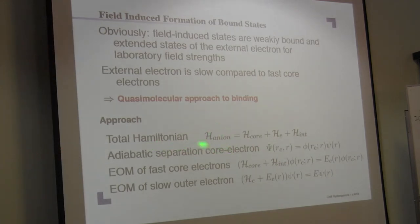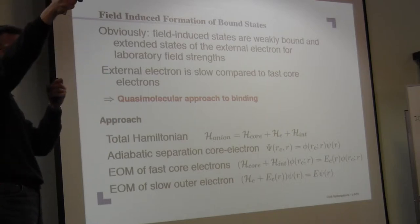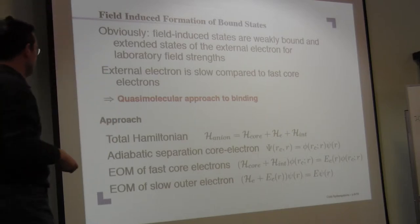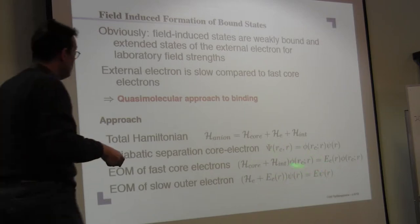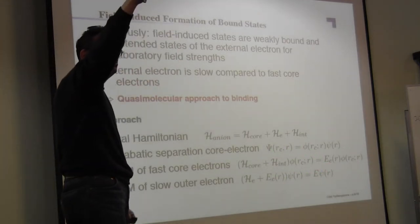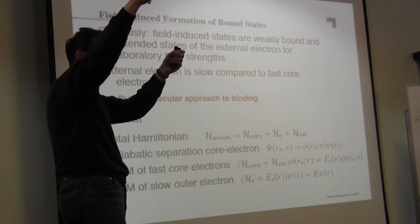We have a total Hamiltonian for the anion, which represents a Hamiltonian from the core, a Hamiltonian of the outer electron, and an interaction Hamiltonian, which is the interaction between the outer electron and the core. And then you do an adiabatic separation, like you do in Born-Oppenheimer, you do a Born-Oppenheimer separation between the slow outer electron and the fast inner degrees of freedom.